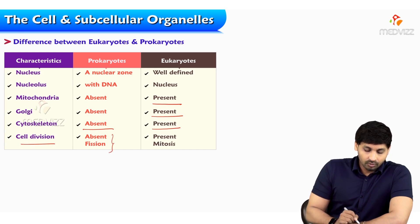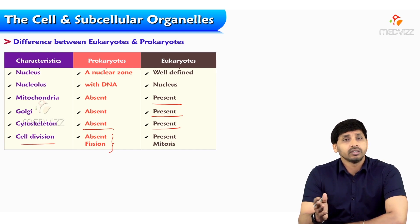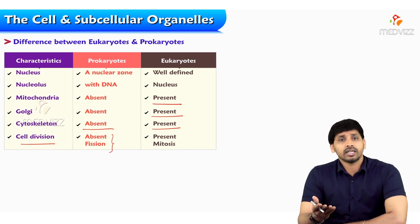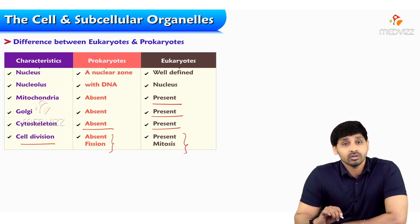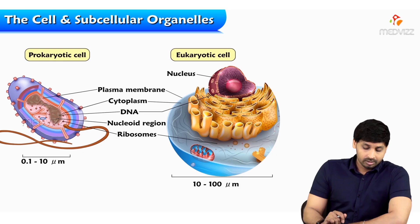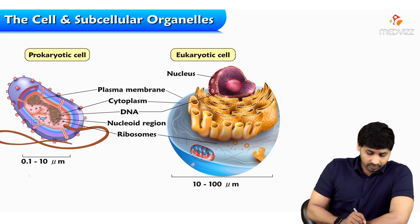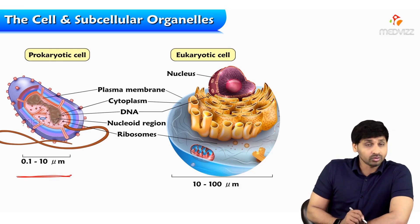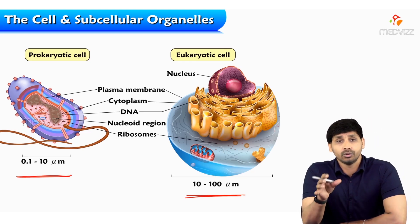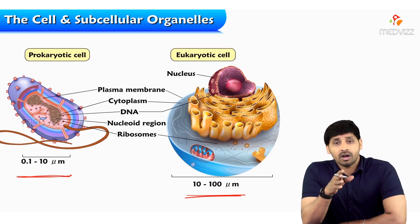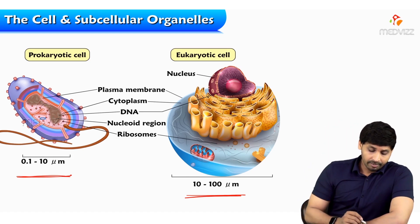Cell division in prokaryotes is of the fission type — binary fission, as studied in school. In eukaryotes, cell division is mitosis. Looking at the diagrammatic representation of prokaryotic and eukaryotic cells, the size of the prokaryotic cell is 0.1 to 10 micrometers, whereas the eukaryotic cell is much larger at 10 to 100 micrometers.